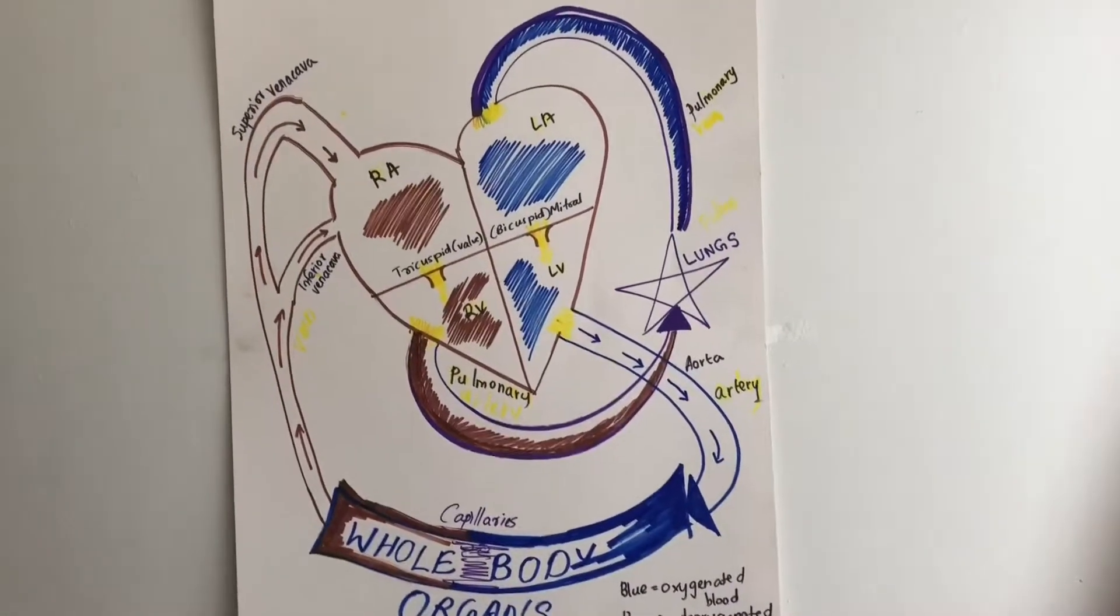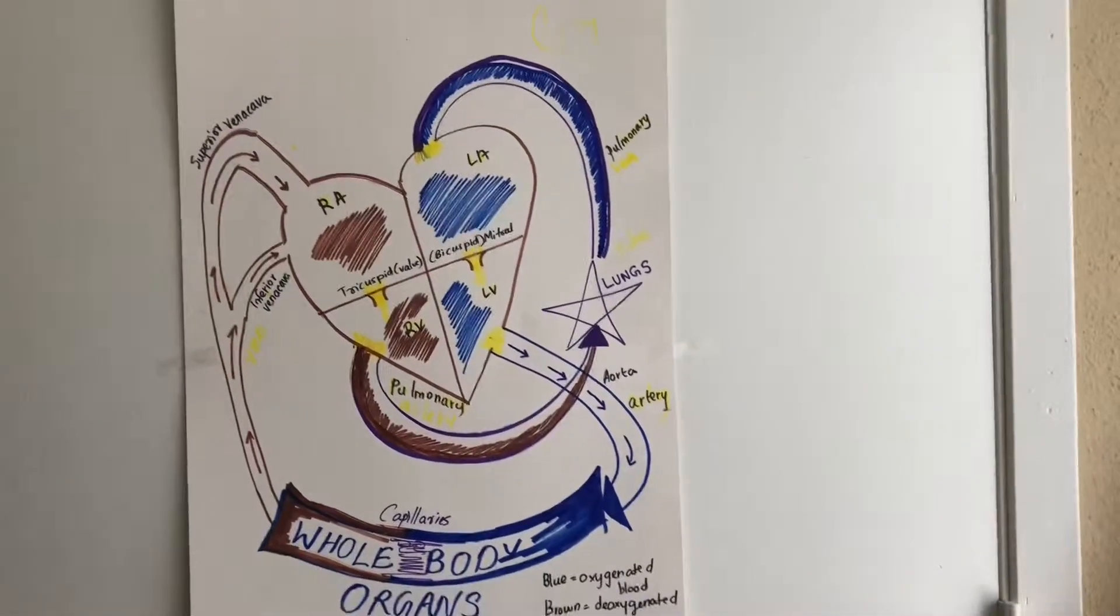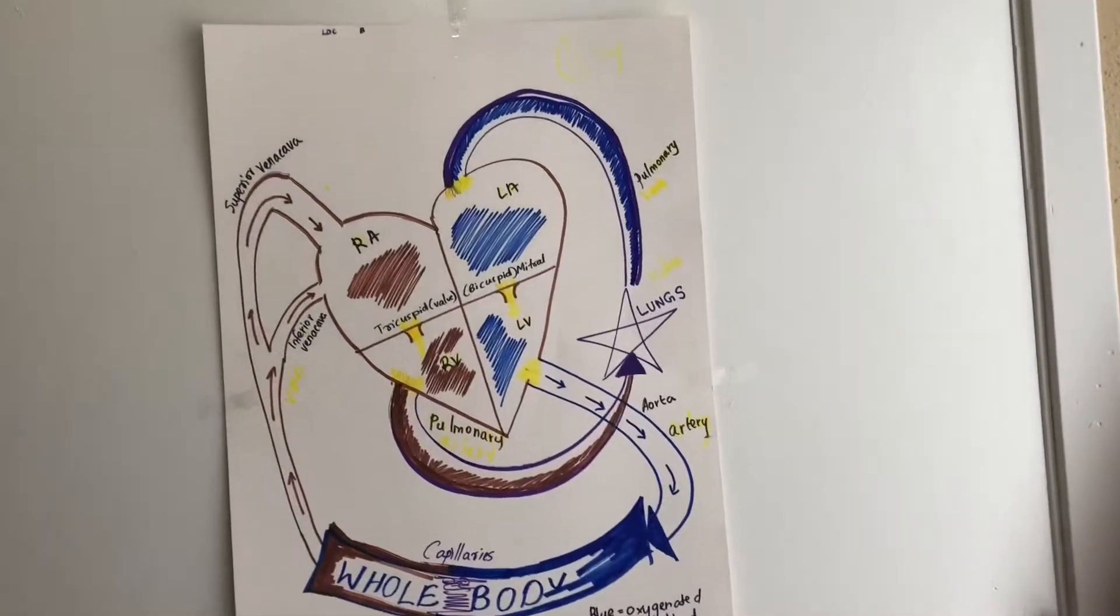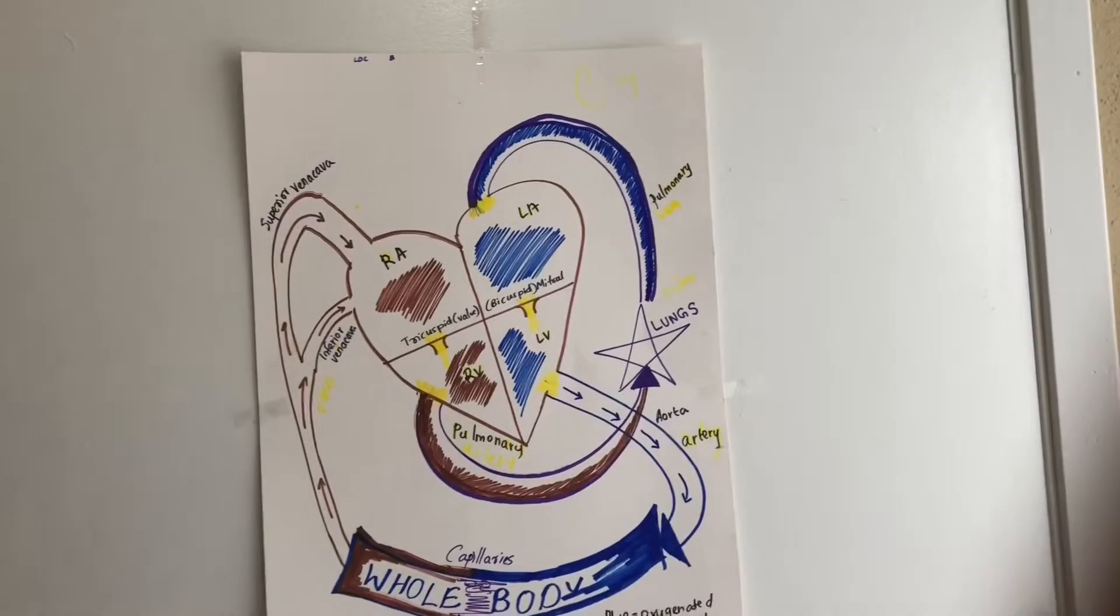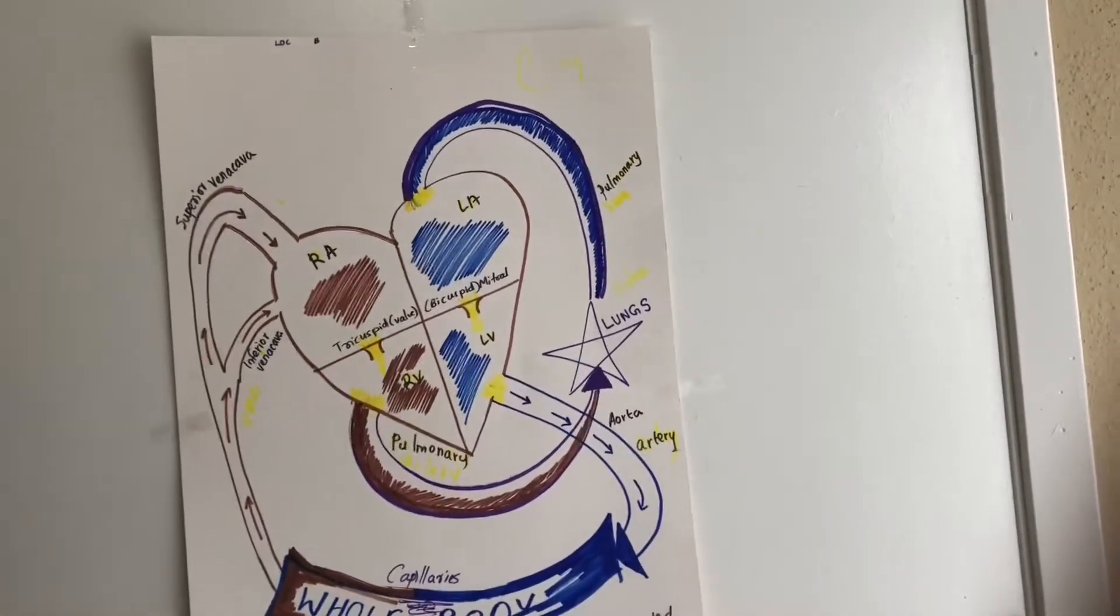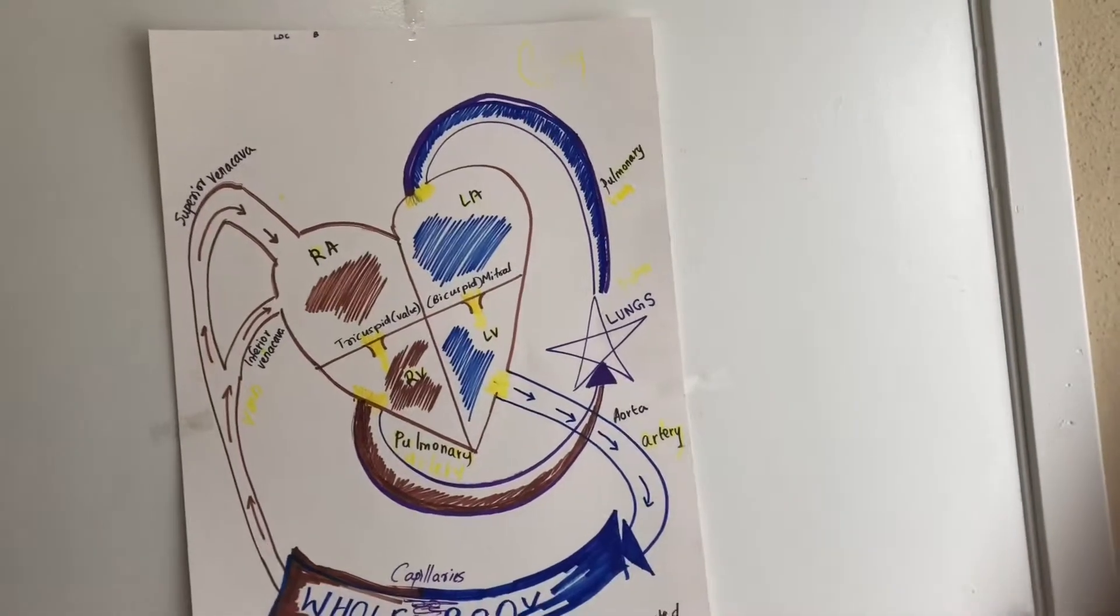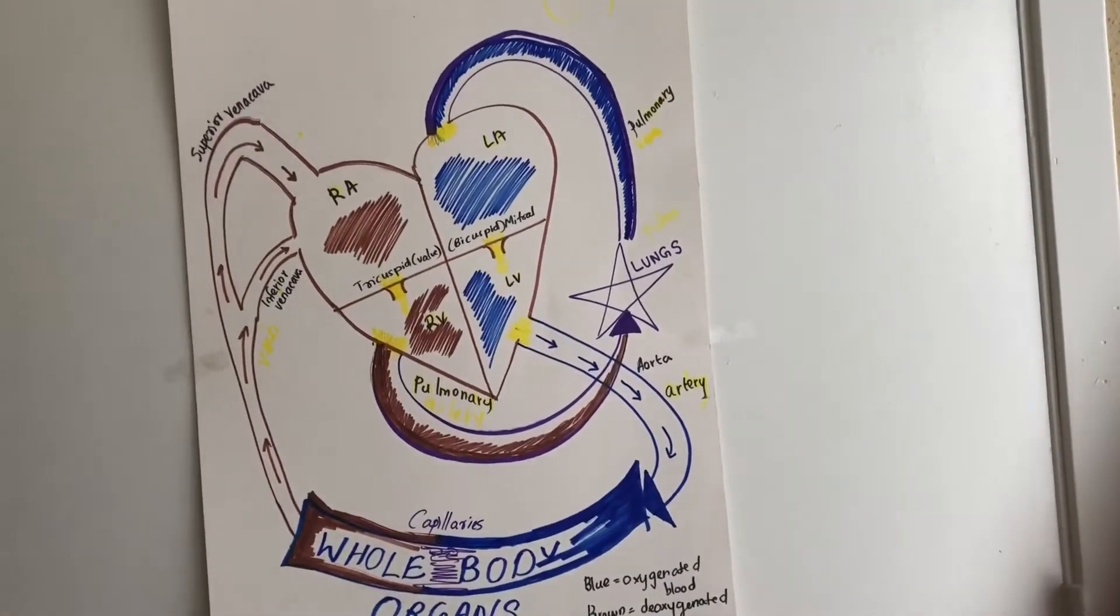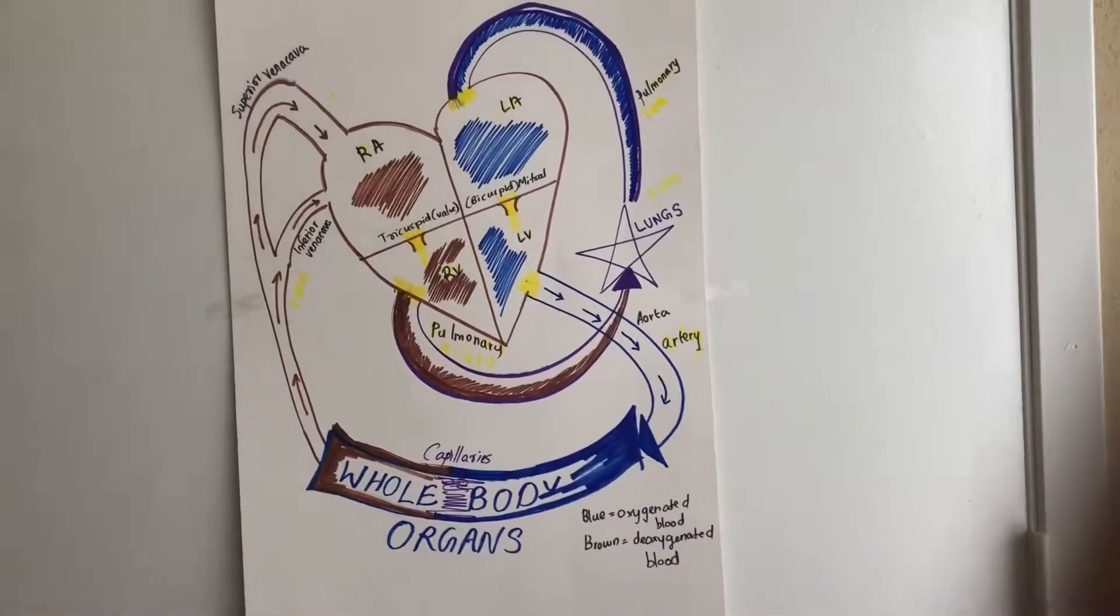The blood goes to the lungs. When oxygen is taken in the lungs, the oxygenated blood goes into the pulmonary veins.